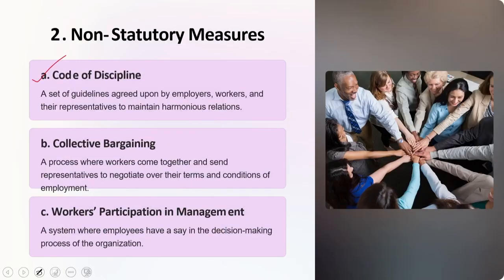The first non-statutory measure is the code of discipline. It is nothing but a set of guidelines agreed upon by employers, workers, and their representatives to maintain harmonious relations. The code emphasizes compliance with laws like labor laws, regulations, and agreements governing the employment relationship. It promotes equal treatment and prohibits discrimination based on race, gender, religion, disability, age, or any other protected characteristics. The code also sets standards for acceptable workplace behavior including maintaining discipline, professionalism, and punctuality.